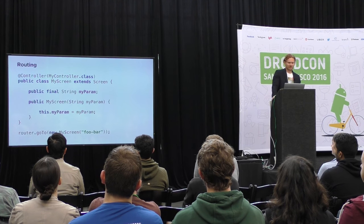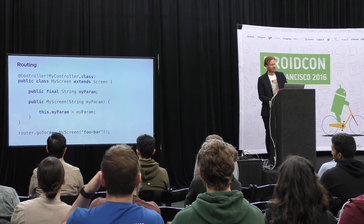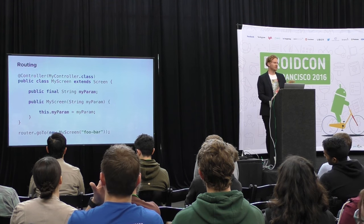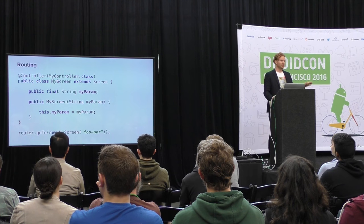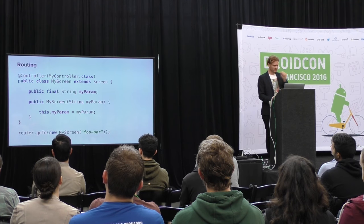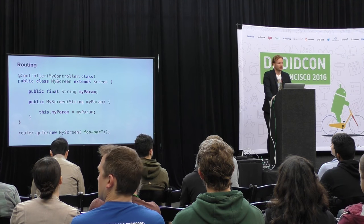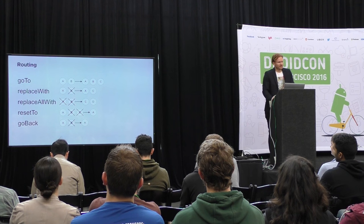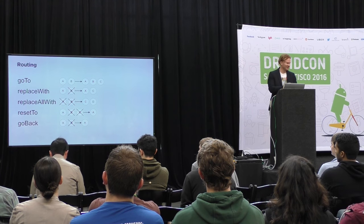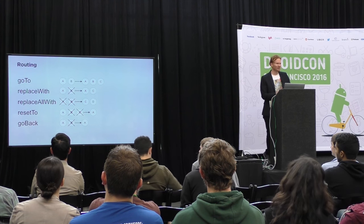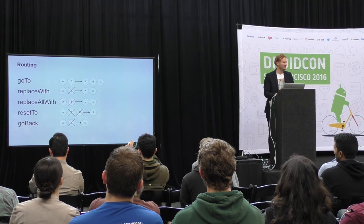On this slide I have a sample screen object that allows us to pass a param to another screen, and also has a controller annotation that defines what needs to be rendered. The basic navigation method is go-to, which takes your screen, renders it, and puts it on top of the backstack. In total we support five primary navigation methods, which covers all the scenarios we need at Lyft. For more details you can look at the docs and the samples.